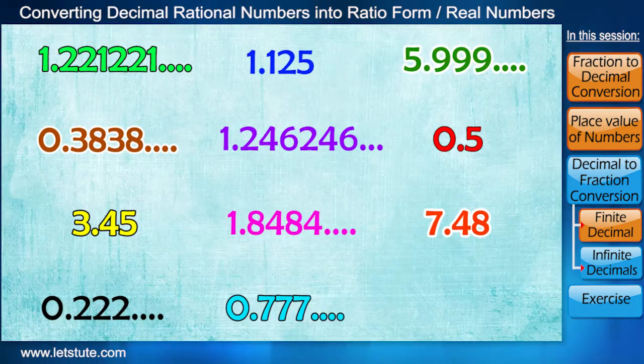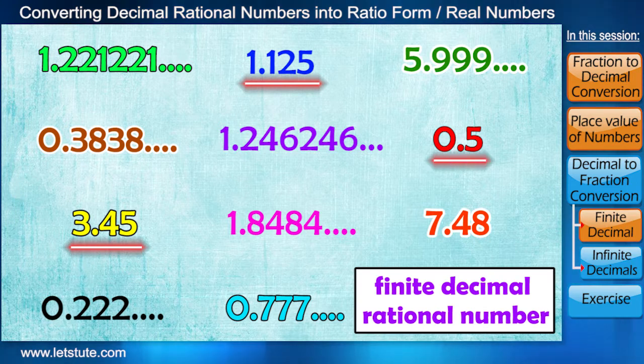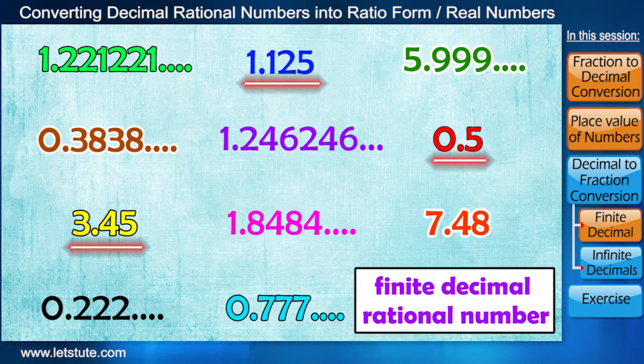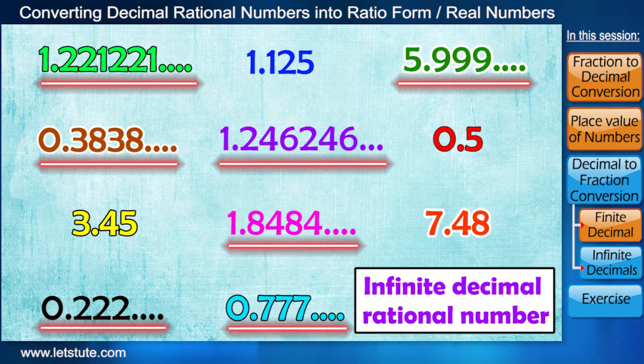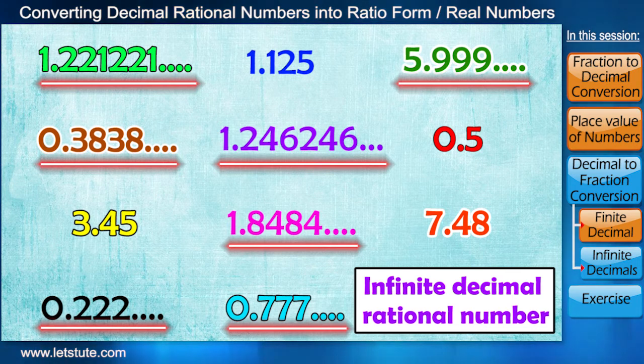So till now we have learned to write finite decimal rational numbers into fraction form. But suppose we have rational numbers in the form of infinite decimals, then how to go about it? We also have a very simple way for this.